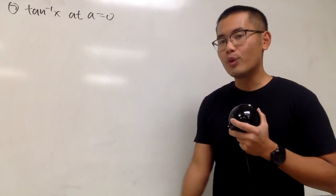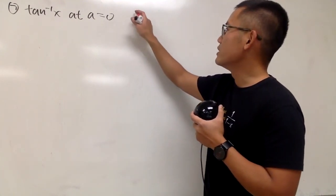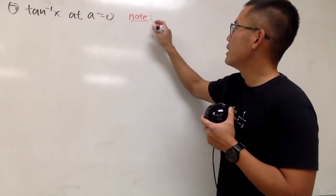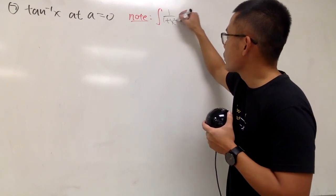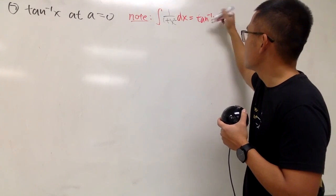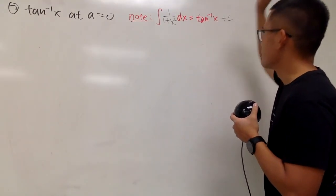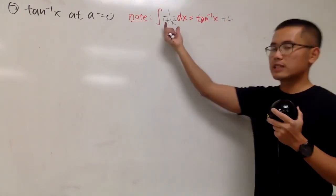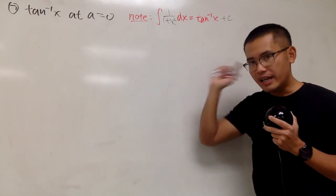So if we integrate 1 over 1 plus x squared, we get inverse tangent. The strategy is — I'll just put down a note here — if we integrate 1 over 1 plus x squared, this will give us inverse tangent of x, plus C. So we'll come up with a series for 1 over 1 plus x squared and integrate that.